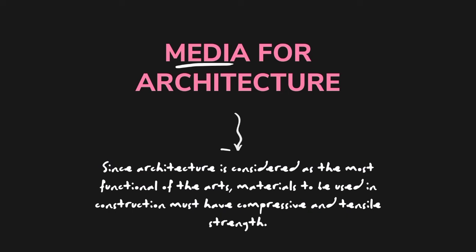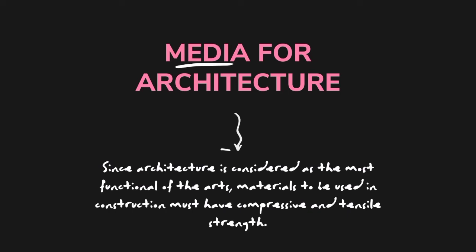Since architecture is considered the most functional of the arts, materials used in construction must have compressive and tensile strength. The following are materials used for creating buildings and infrastructures. Stones and Bricks. Stones are favored over other materials for their durability, adaptability to sculptural treatment, and use for building simple structures in their natural state.